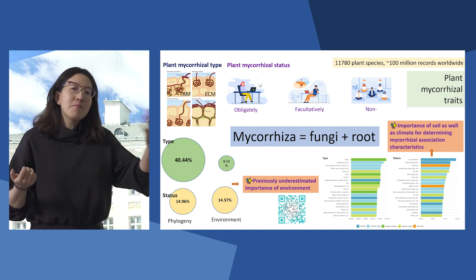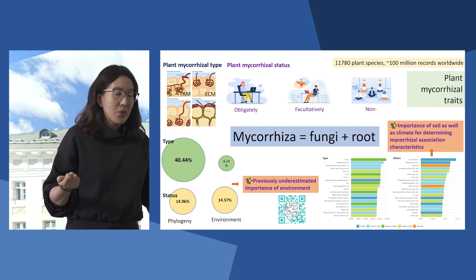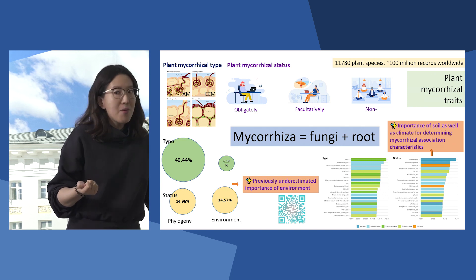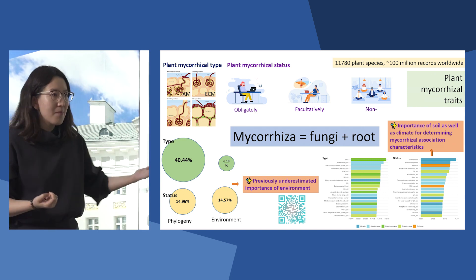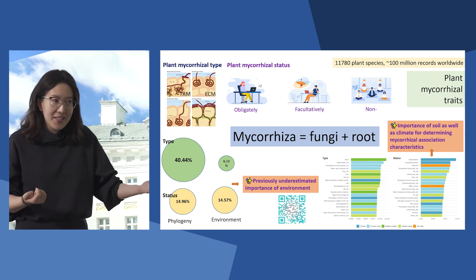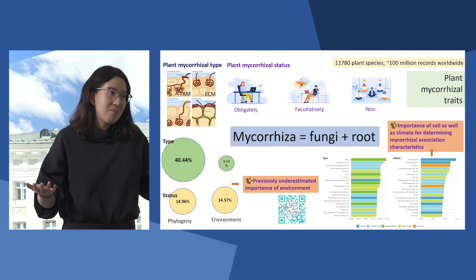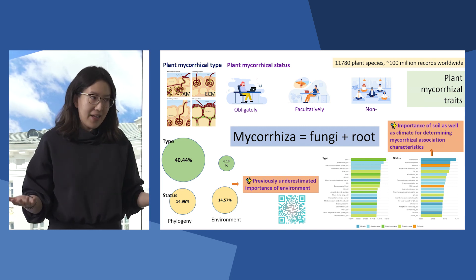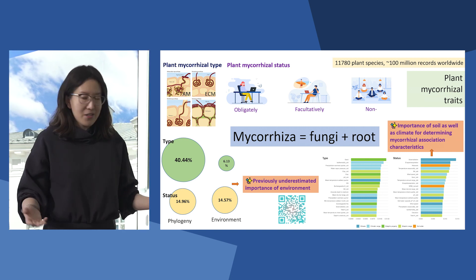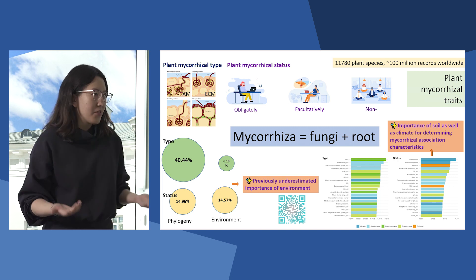Let's go back to human blood type. We know that a person's blood type is determined by his or her parents and has basically nothing to do with other factors. But how about mycorrhizal type?